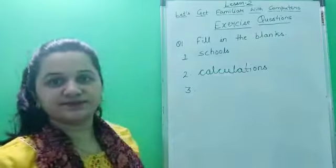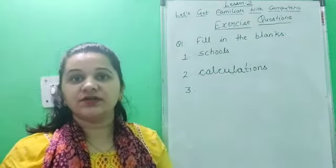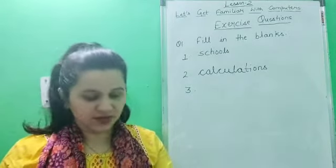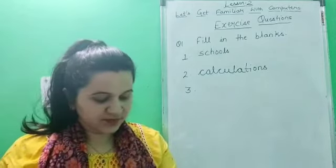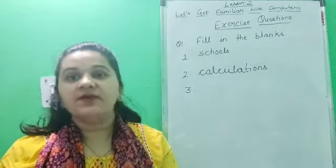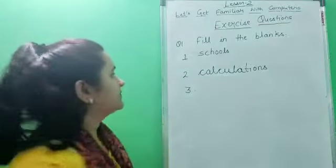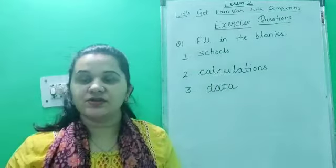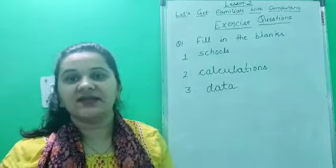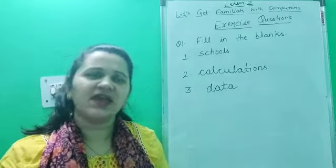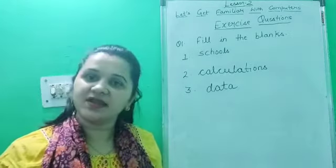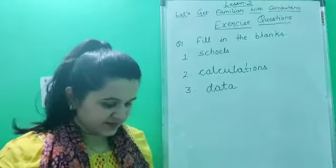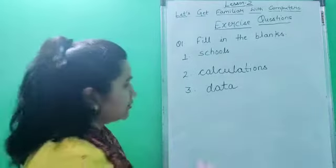Now for the third blank, write down D-A-T-A, data. Children, data could be anything like letters, numbers, pictures, images — anything. So a computer can store any kind of data and information in it. Got it children? Now move on to question number 2.